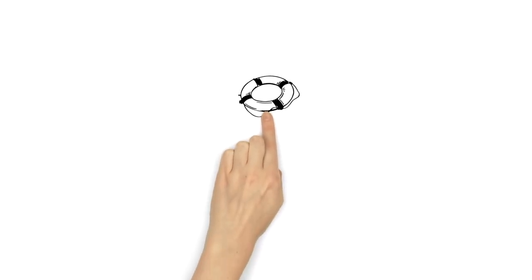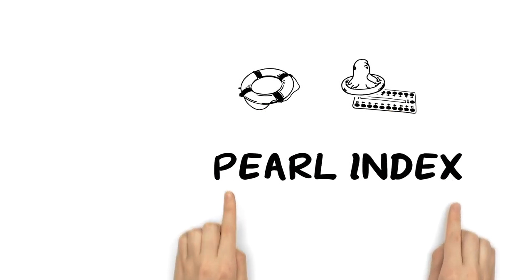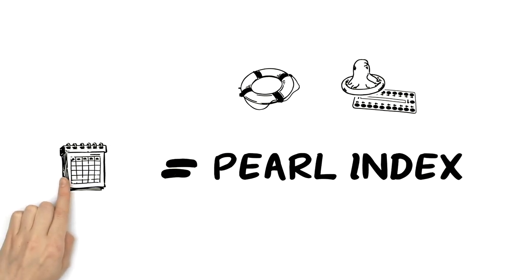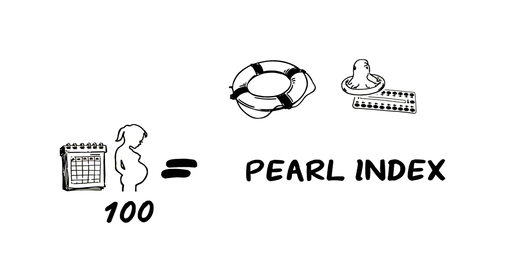You can check the safety of a method through the Pearl Index, which calculates the annual number of pregnancies per 100 women. The safer a method, the lower the value.